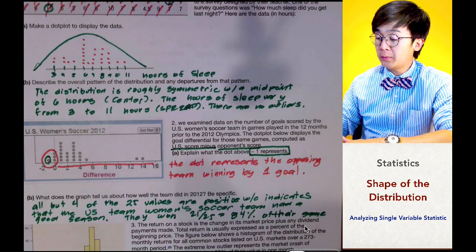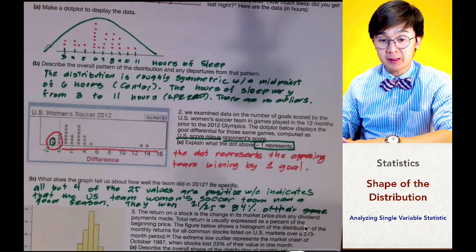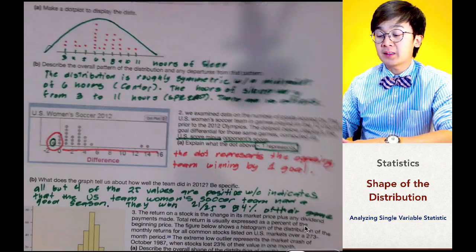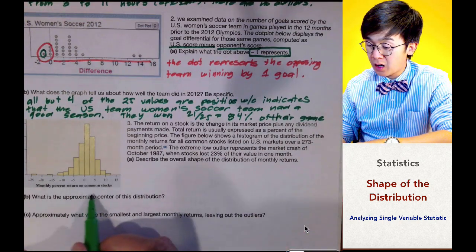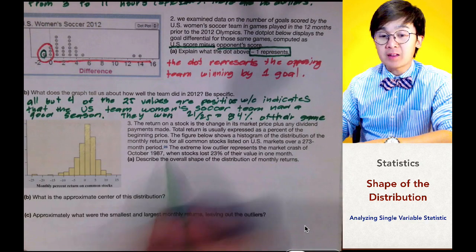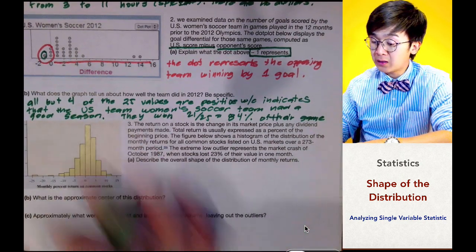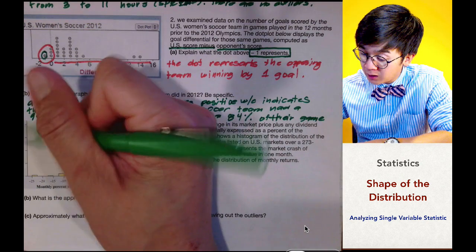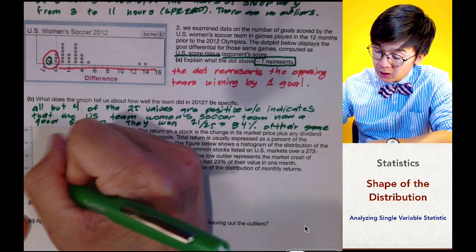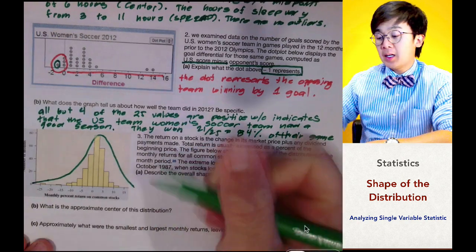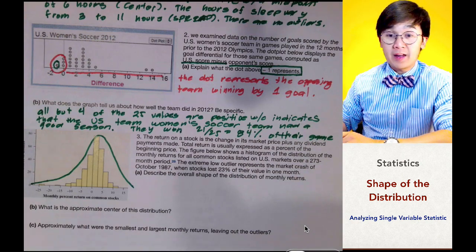That's how we analyze their performance in that particular season, given the predominantly positive values in the data set. For the last problem, we're looking at a histogram showing monthly percent returns on common stocks. We need to describe the overall shape of the distribution. The vertical axis represents the number of months recorded, and looking at the histogram, we can identify the shape of the distribution.